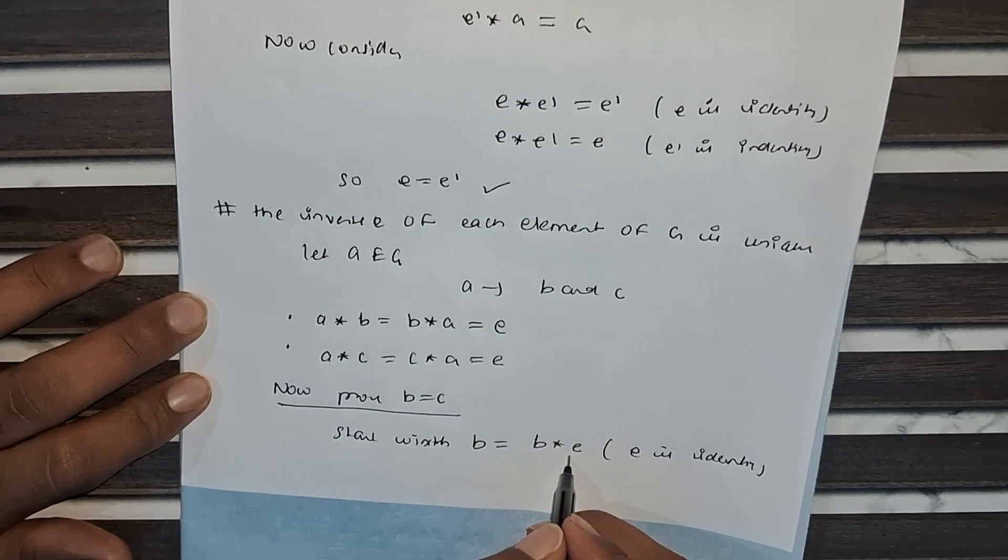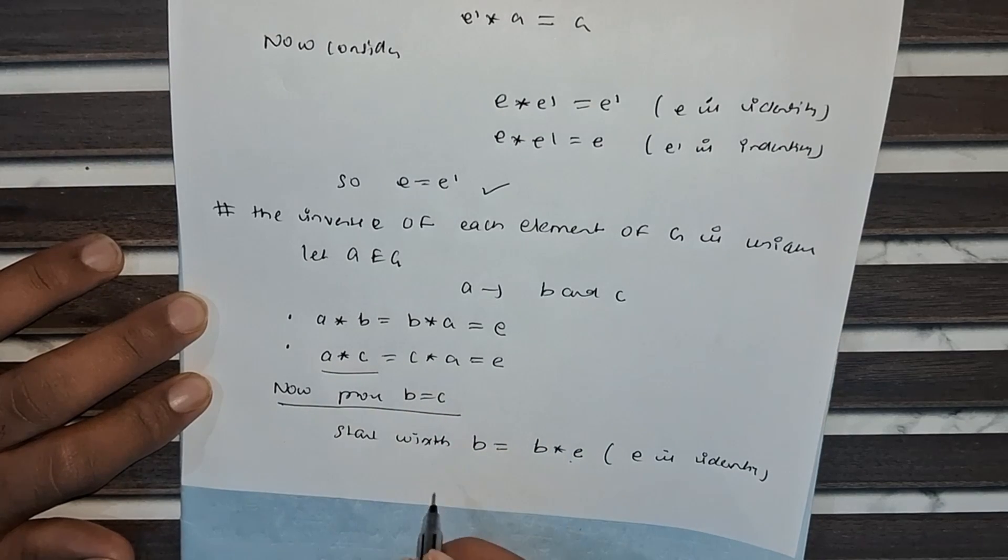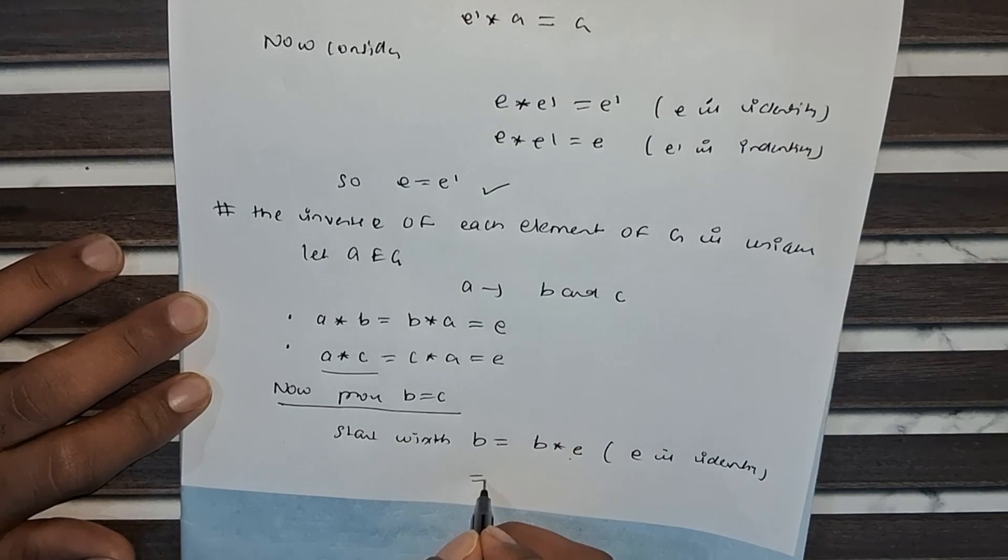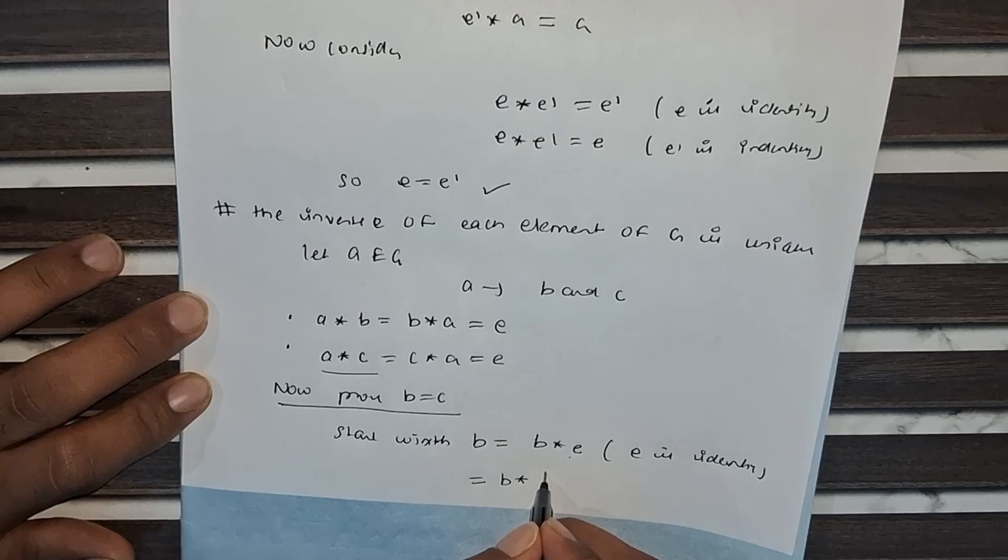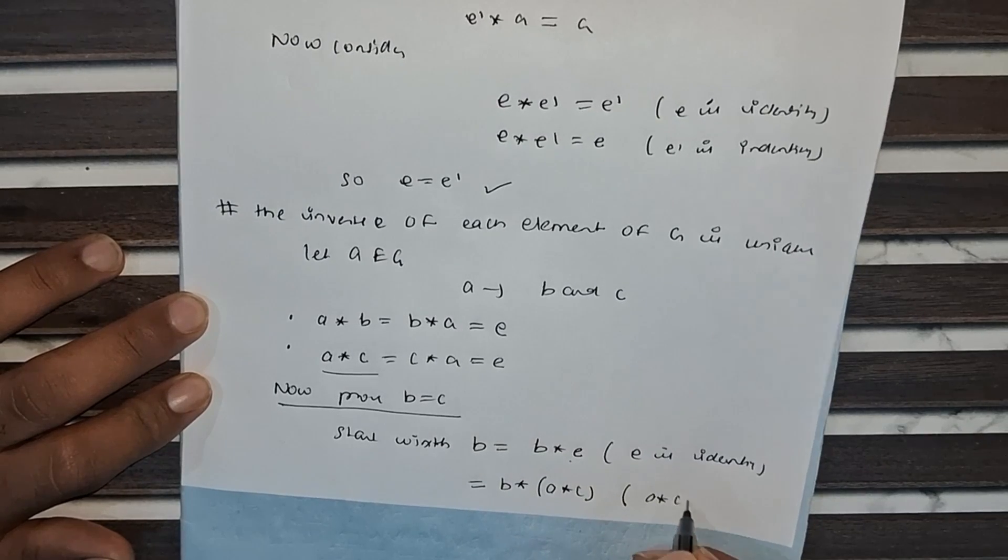What is the value of E? E equals A times C, so we have B equals B times A times C.